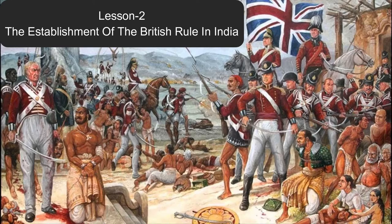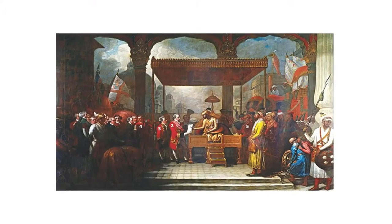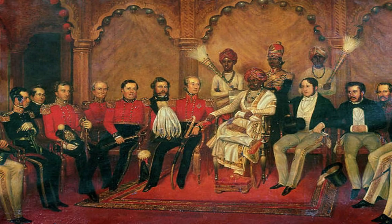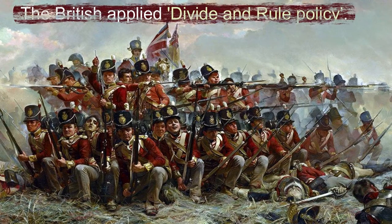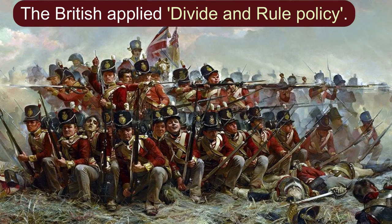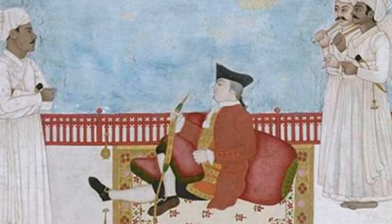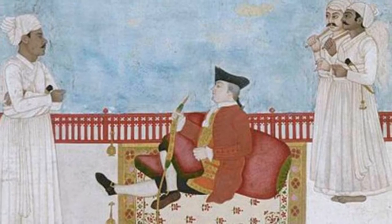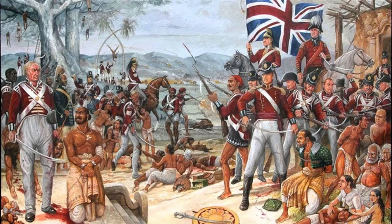Children, as we know, the East India Company came to India for trade but gradually became the political master, aiming to establish British rule in India. To achieve their aim, the British applied a divide and rule policy. To resolve their intention, the British got many privileges from royal decrees. Later on, they started misusing their commercial privileges to get more profit.